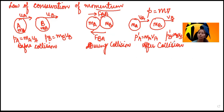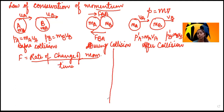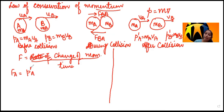As we know, Newton's second law states that force is proportional to the rate of change of momentum, that is F = change in momentum divided by time. For the first body, the force F_A equals the change in momentum of the first body: F_A = (p_A' − p_A) / t = (m_A × v_A − m_A × u_A) / t.